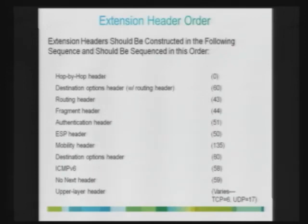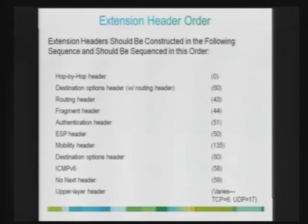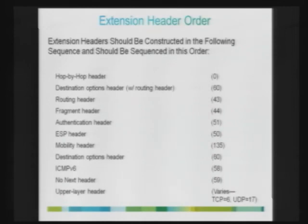For example, a hop-by-hop extension header means its content must be processed by every intermediate node routing the IPv6 packet. The destination options extension header is processed only by the node matching the IP destination address. However, if you are using a routing header — similar to loose source routing in IPv4 — the destination address keeps changing as the packet traverses until replaced with the final destination. In that case, a destination options header can also be processed by intermediate routers along with the routing header.